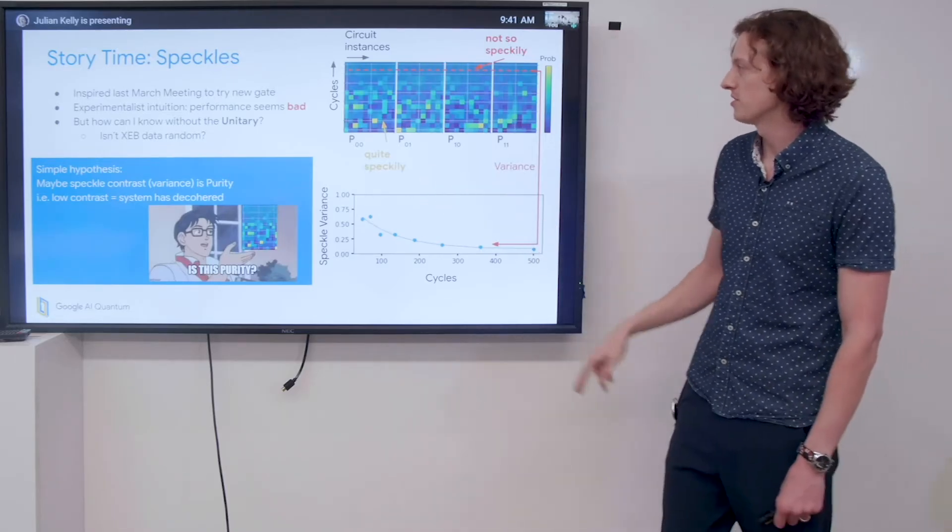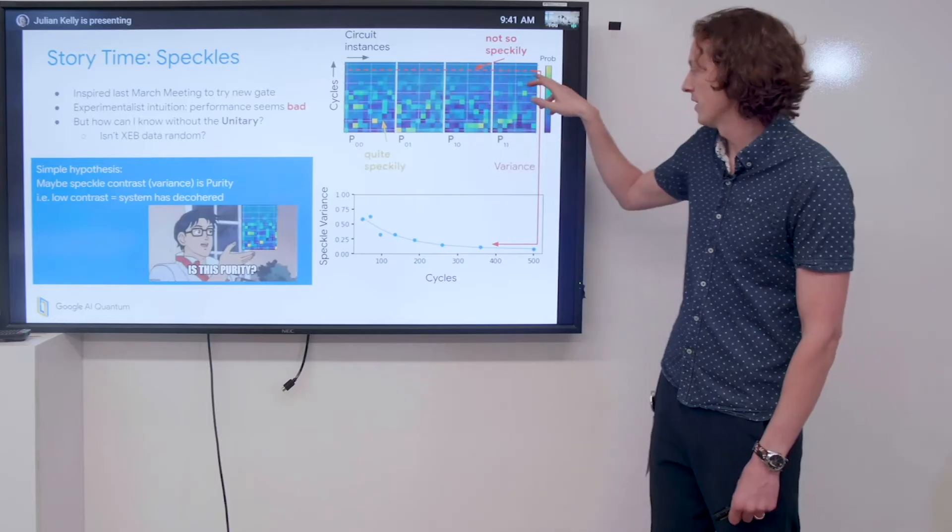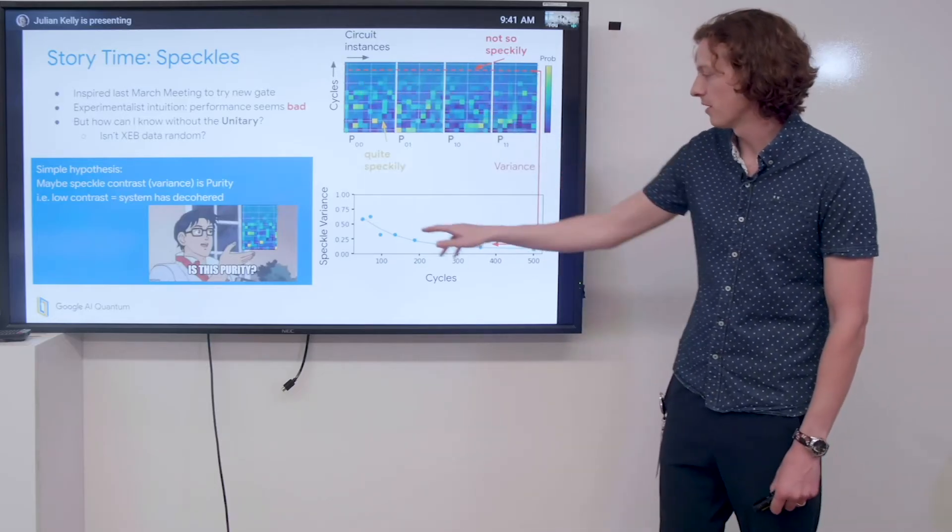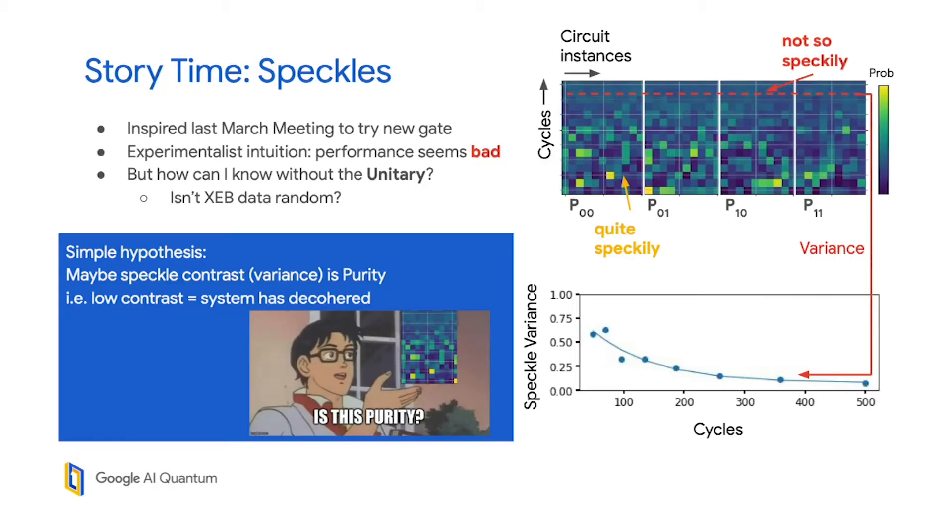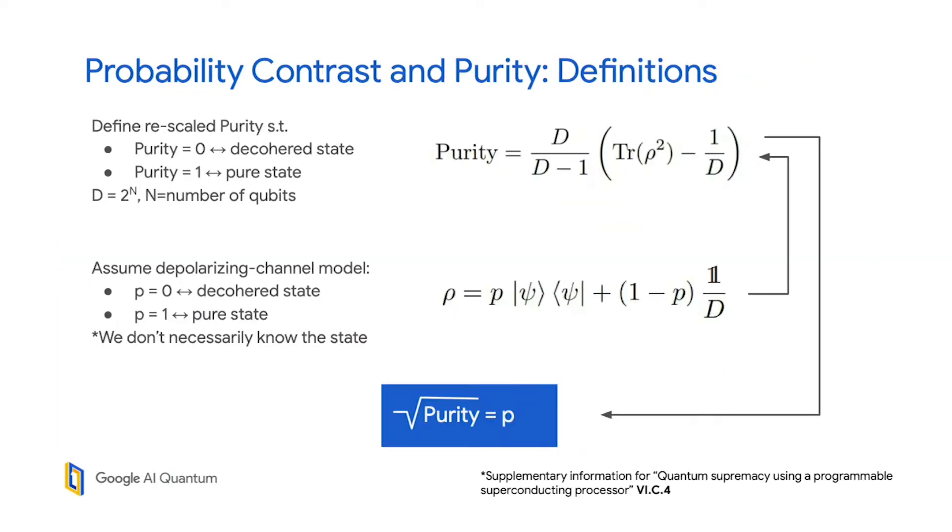I did something very simple: I just took a cut like this, took the variance of that, and plotted it versus cycle number, and I see this nice exponential decay. After this, I got excited and went to talk to some of our awesome theory friends like Sergio Boixo and Sasha Korotkov.